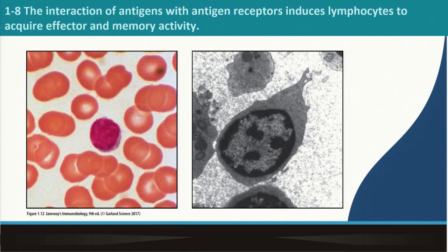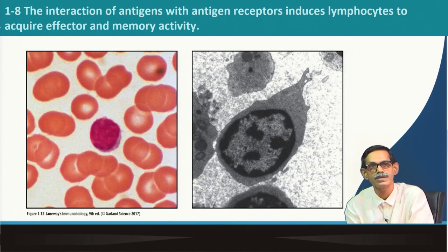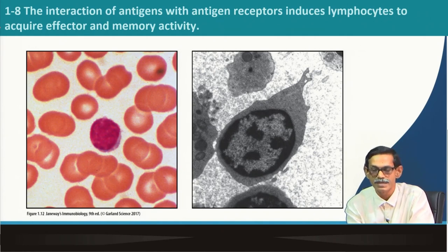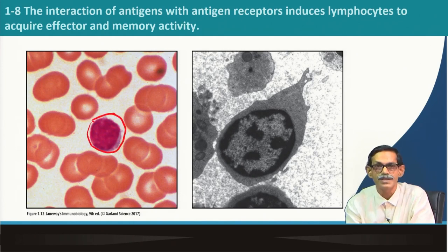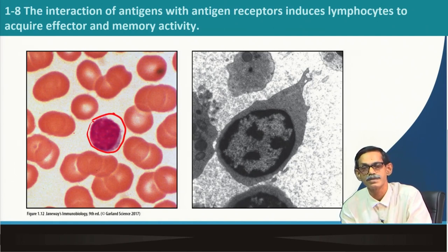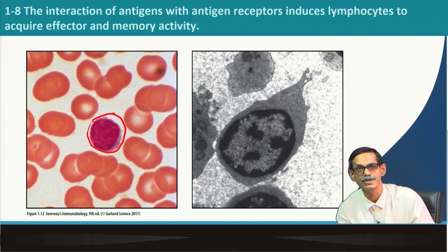The key point of adaptive immunity is that the interaction of antigen with antigen receptor induces lymphocytes to acquire effector and memory activity. This is how lymphocytes look in blood under a regular microscope and in an electron micrograph — just to show you how lymphocytes appear under both types of microscopy.